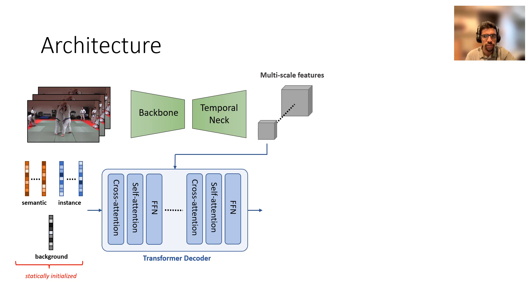Additionally, we also have a set of semantic queries and a background query. These three query sets are concatenated and input to our transformer decoder which refines these queries by applying self-attention among the query set and also cross-attention with the multi-scale video features. The output of the decoder is a set of refined queries.